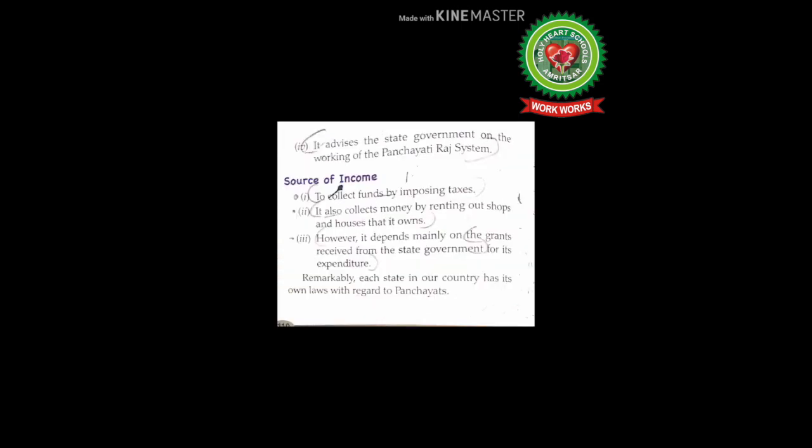Number two: it makes developmental plans at the district level — building industry, new businesses, and ensuring agriculture, education, and health departments are functioning efficiently. Number three: it regulates the distribution of money among all the Gram Panchayats with the help of Panchayat Samithis. Number four: it advises the state government on the working of the Panchayati Raj system.